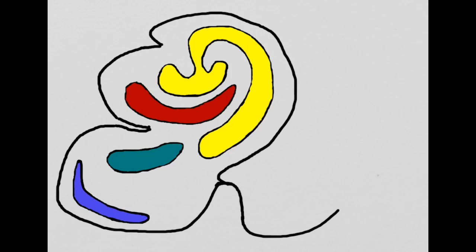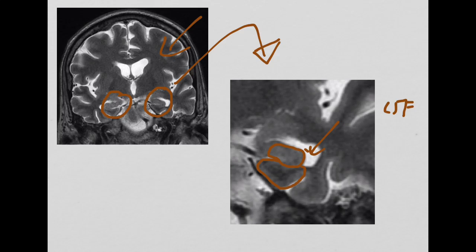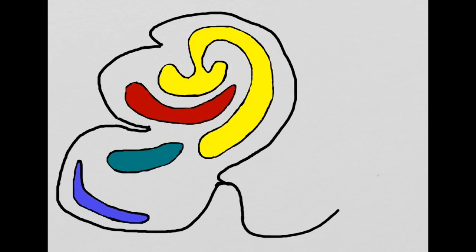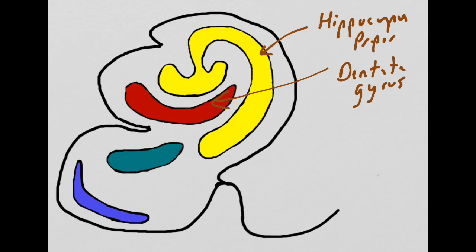If we take a look at kind of a cartoon picture of this MRI here, what you'll see is that this yellow area is the hippocampus proper. The red area here is going to be your dentate gyrus. Green here is going to be the subiculum. And then blue here is going to be an area known as the entorhinal cortex. And we haven't discussed that yet, but will in the next slide when we talk about the circuitry of the hippocampus.